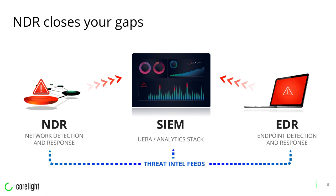EDR — Endpoint Detection Response — I think probably most of you on the call are familiar with and have used those tools in your daily job. NDR, Network Detection Response, is sort of the mirror image of EDR, except it's obviously on the network. It involves equivalent detection, response, and visibility capabilities as you might find at an endpoint. On the network side, it's typically a passive, out-of-band deployment where you're monitoring a copy of network traffic, whether that's on-premise or in cloud environments.